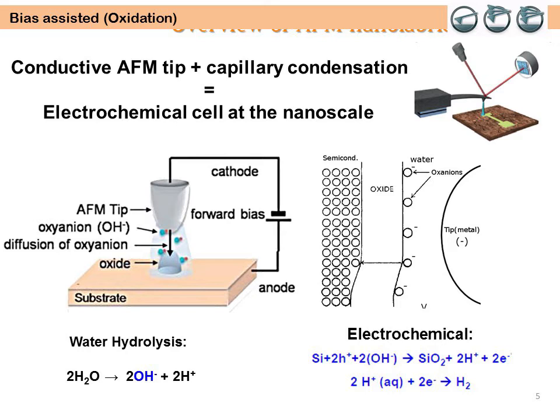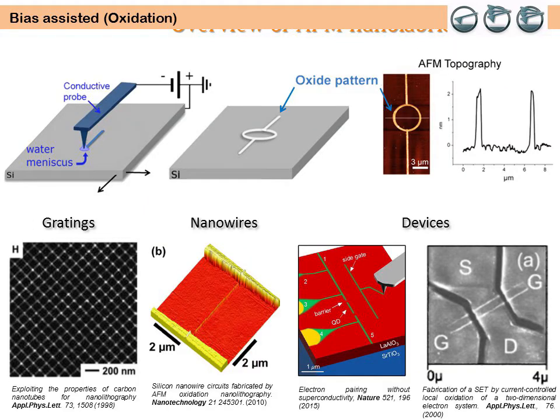The figures illustrate the oxidation of a silicon substrate. Apart from silicon, bias-assisted oxidation has been used to modify different surfaces such as silicon nitride, III-V compound semiconductors, metals — both bulk and films — perovskite oxides and cerium oxide.